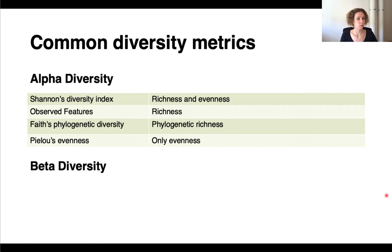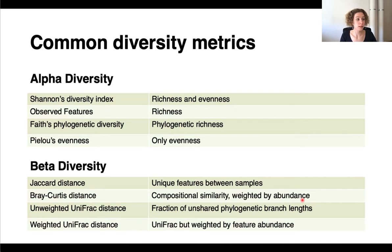And then moving on to beta diversity, so how different is the microbial composition between samples? We have the Jaccard distance, so that is the unique features between samples, but regardless of their abundance. We have Bray-Curtis distance, which is the compositional similarity, but weighted by abundance.